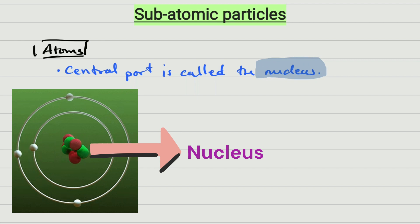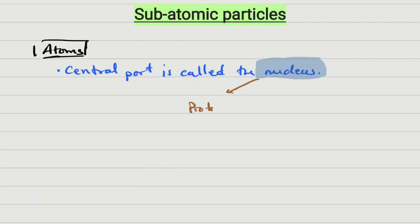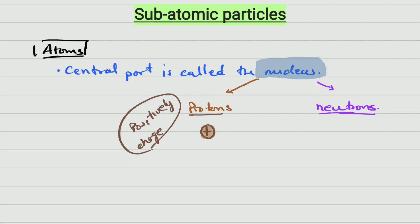In the nucleus there are going to be different particles. So in the nucleus you are going to find particles called protons and particles called neutrons. The protons have a positive charge, so if we represent protons they will be very tiny particles with a positive sign inside. The neutrons won't have any charge, so if we represent a neutron it will be a circle with no charge.